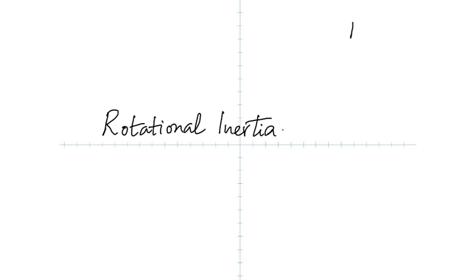Let's say we have a disc and a ring — both having the same mass, the same size, and rotating about an axis through the center. You know a ring has all of its mass situated away from the axis. So which one has a bigger rotational inertia? The ring.